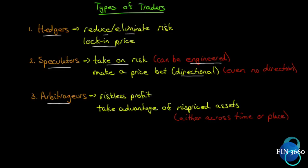Speculators can even make a bet—make a price bet on no direction. It doesn't have to be directional; it can be non-directional. They can make a bet on absolutely no direction. We're going to see how that's done; a lot of this is done with options. And then we have arbitrage. Arbitrage is a riskless profit; it takes advantage of mispriced assets.